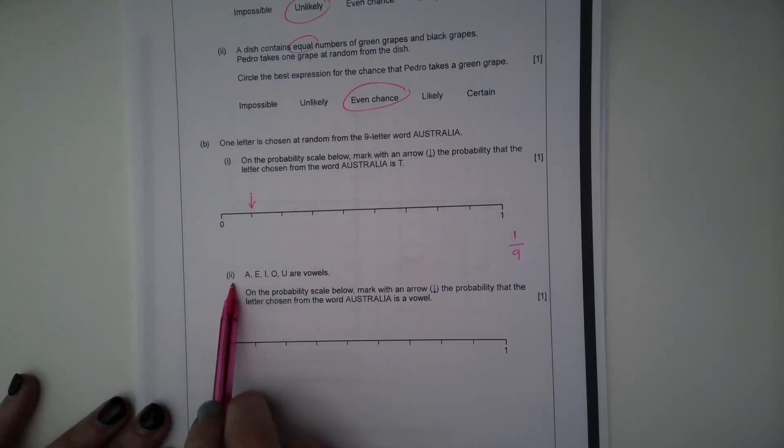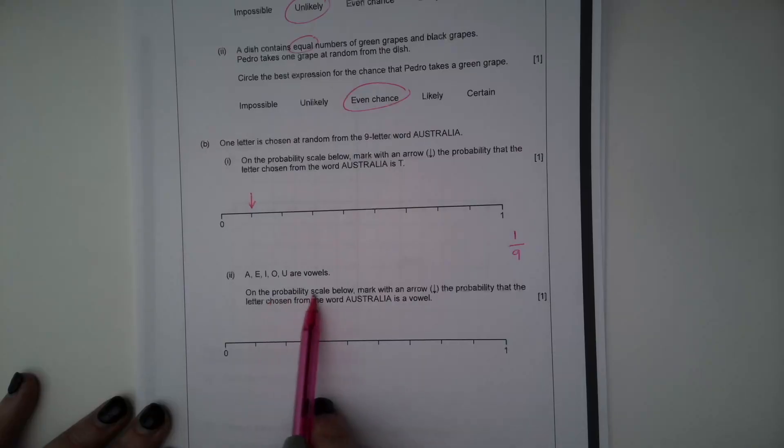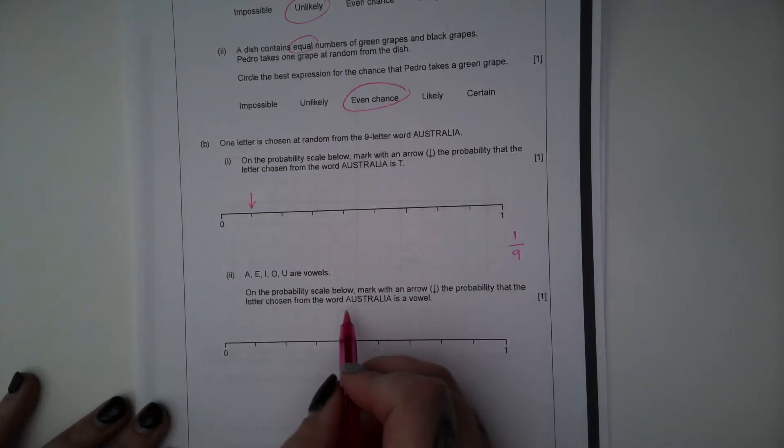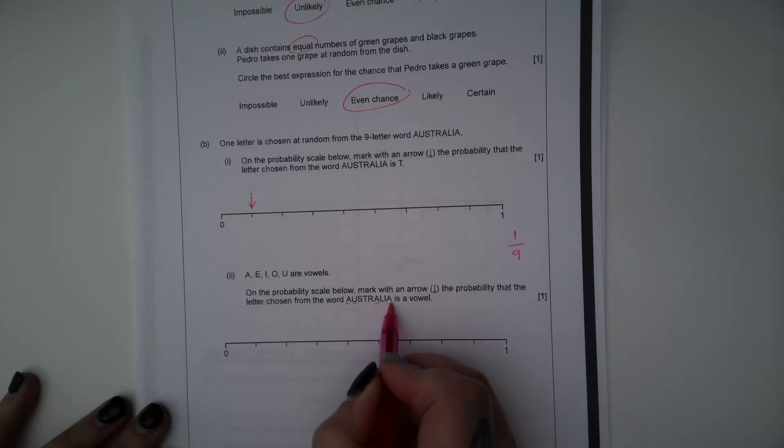Part two. A, E, I, O, U are vowels. On the probability scale below, mark with an arrow the probability that the letter chosen from the word Australia is a vowel. So let's see how many vowels we've got: one, two, three, four, five.